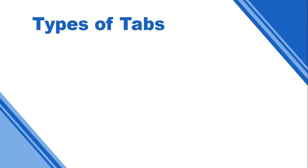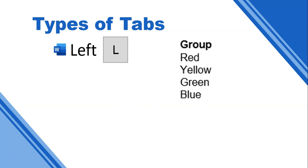First things first, let's talk about the left tab. It's got a little icon on the ruler — it looks like an L, but the line going up is on the left-hand side. When you have text aligned to the left, you'll see that all the text on the left side is one underneath each other — it's almost like you can draw a line next to it.